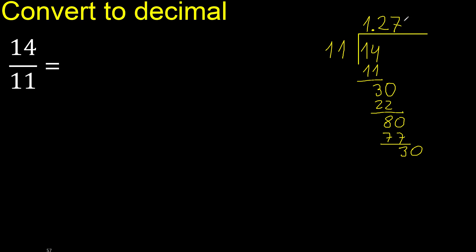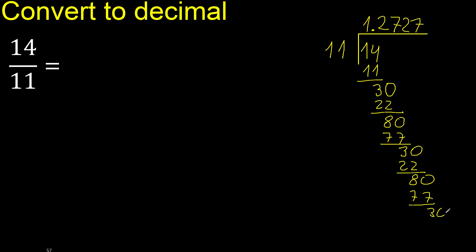11 multiplied by 2 is 22. Subtract — complete. Then 80, multiplied by 7 is 77, subtract — complete. Ok.